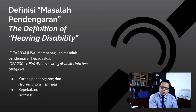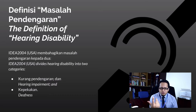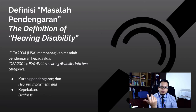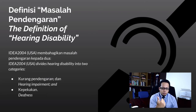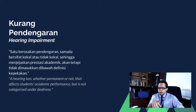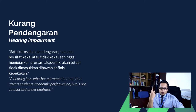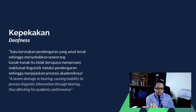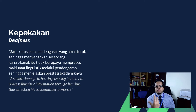Now let's look at the definition of hearing disability. According to IDEA 2004 — the Individuals with Disabilities Education Improvement Act 2004 — hearing disability is divided into two categories: the first is hearing impairment, and the second is deafness. Hearing impairment refers to a hearing loss, whether permanent or not, that affects a student's academic performance but does not fall under deafness. Deafness is a severe damage to hearing causing inability to process linguistic information through hearing, thus affecting academic performance.